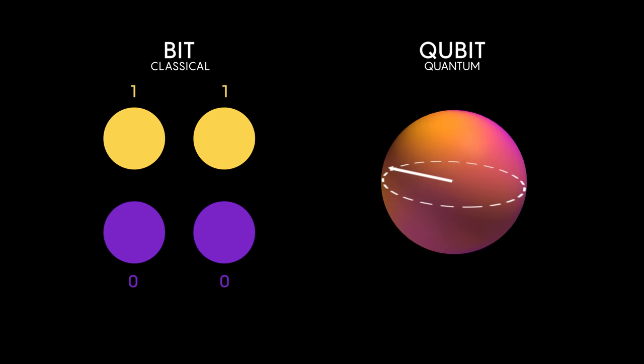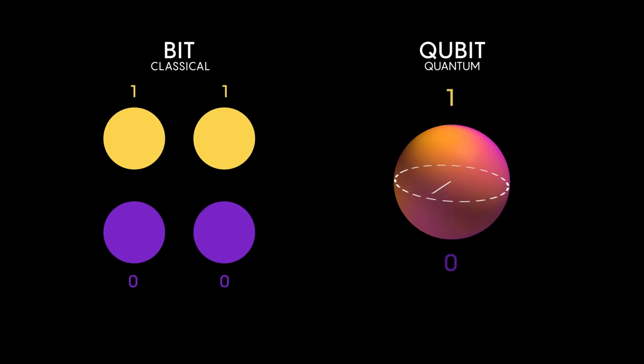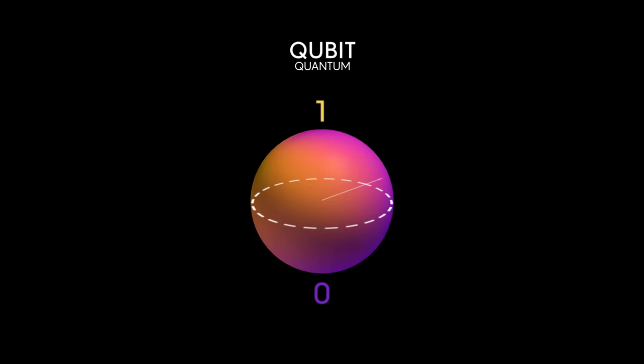Qubits can be zero, one, or what we call a linear combination of zero and one. This fluid combination of amplitudes is at the core of quantum computing.